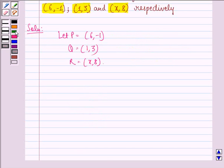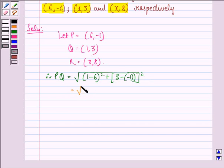Therefore, PQ is equal to square root of (1-6) the whole square plus (3-(-1)) the whole square. That is equal to square root of (-5) the whole square plus 4 square.